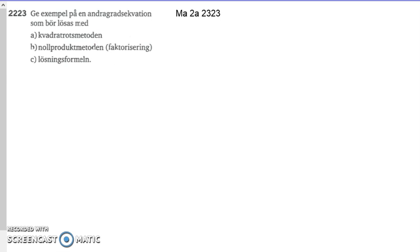This example covers three methods for solving quadratic equations: kvadratrotsmetoden (the square root method), nollproduktmetoden (the zero product method or factorization), and lösningsformeln (the general formula). I've gone through this before, but if you haven't seen it, I'm going to show you how to do it.